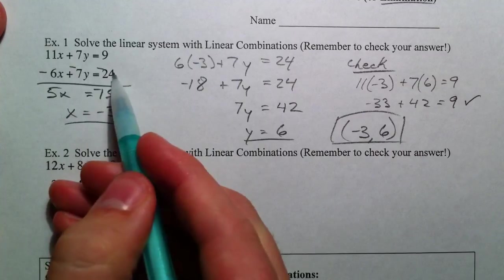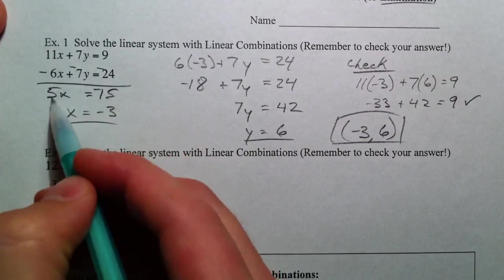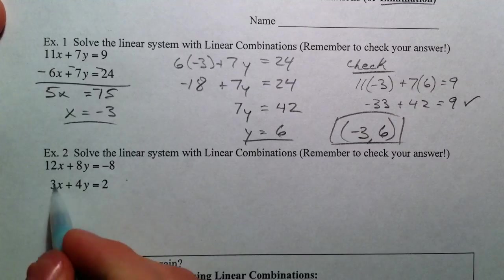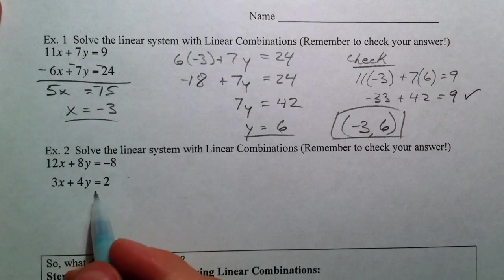Now, that one we really only had to multiply by a negative 1, or we could have just subtracted 9 minus 24. But sometimes, you have to multiply it by an actual number.